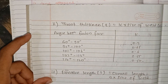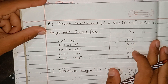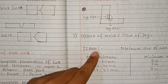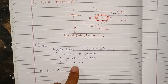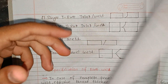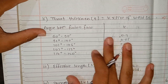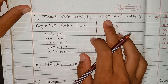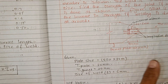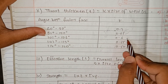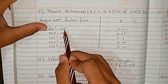The second step is throat thickness. Throat thickness equals size of weld multiplied by a factor based on the angle between fusion faces. The angle is 90 degrees, so the factor is 0.7.